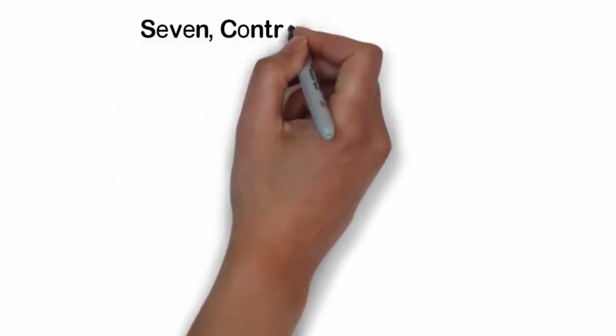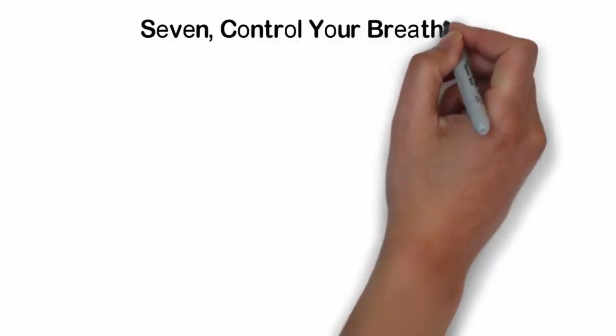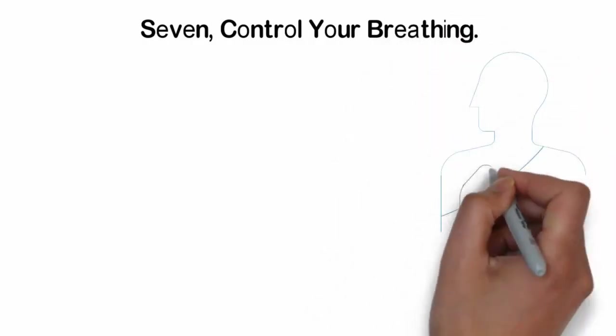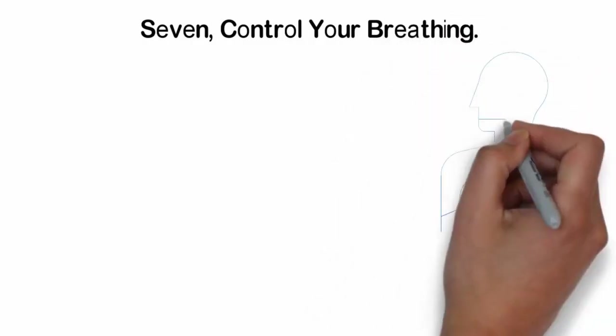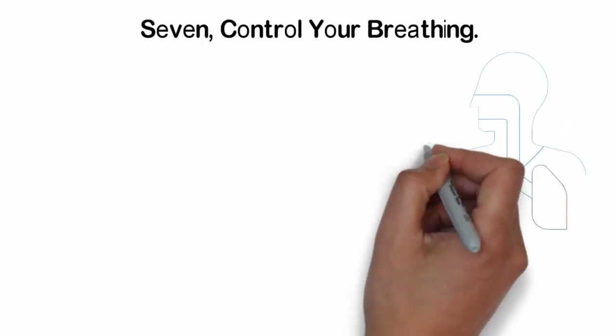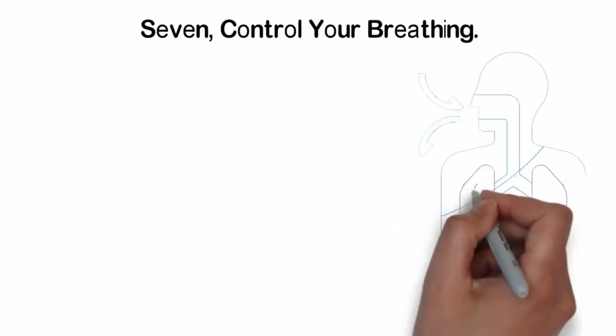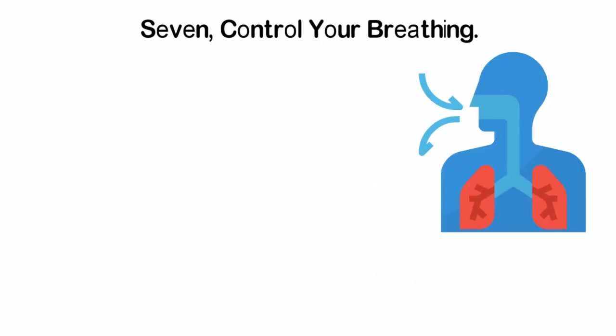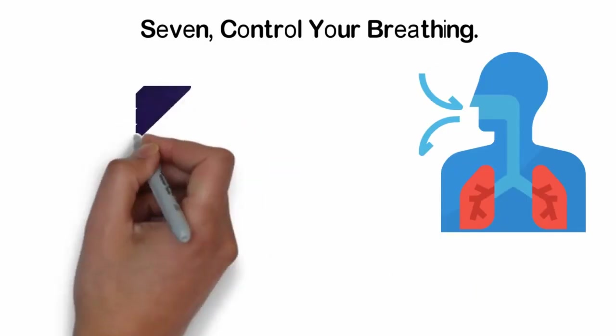Seventh, control your breathing. Although there's very little you can do about your heartbeat or sweating during sex, you can control your breathing. And by doing this, you will have better control over your ejaculation. Breath control plays a very important role in making you last longer in bed. Just when you are close to the point of no return, take a deep breath and count to five before exhaling.